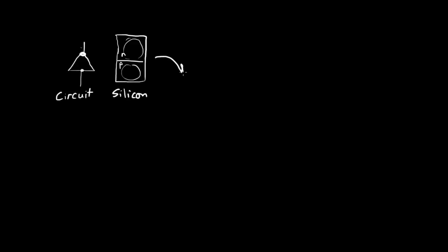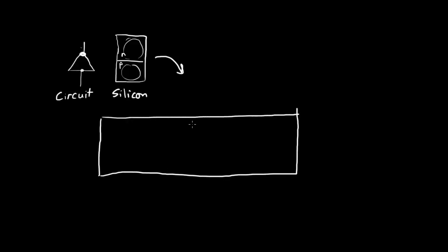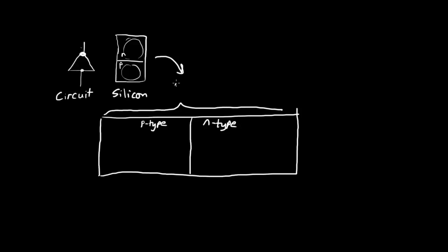Let's flip it on its side to begin the discussion. I'm going to have a volume of silicon, cut down the center. Up top we have p-type silicon, and here we have n-type silicon — n for negative, p for positive. This whole mass is one piece of semiconductor; the semiconductor type is silicon.